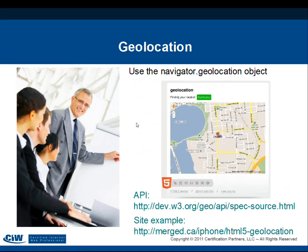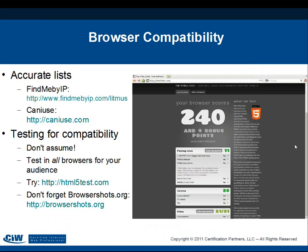HTML5 geolocation uses a W3C API — with the user's permission — combined with a small amount of JavaScript and APIs from Google or Yahoo to create a page that identifies the user's location via Google Maps. James tested this through an iPhone-based site and it located him accurately and easily.